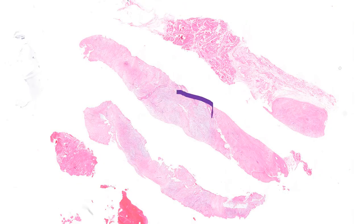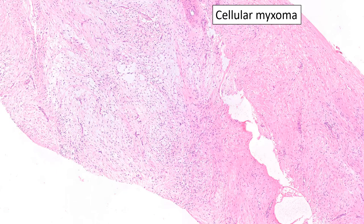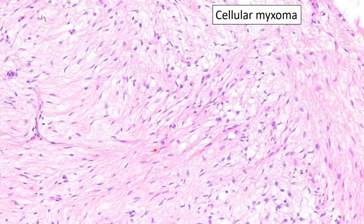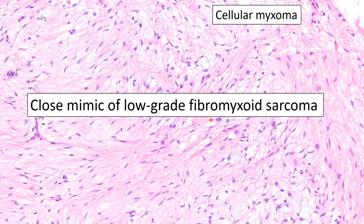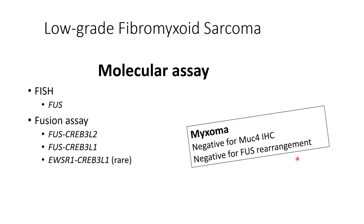Here's another tumor: areas look myxoid, areas look fibrous with a rather abrupt transition, but this is not a low-grade fibromyxoid sarcoma. Instead, this is a cellular myxoma — a very close mimic. Notice fibrous areas, myxoid areas, and these delicate vascular channels. However, these cells appear incredibly bland. So when you get a myxoma that looks cellular, throw a MUC4 on it. Remember, myxomas are negative for FUS rearrangement.